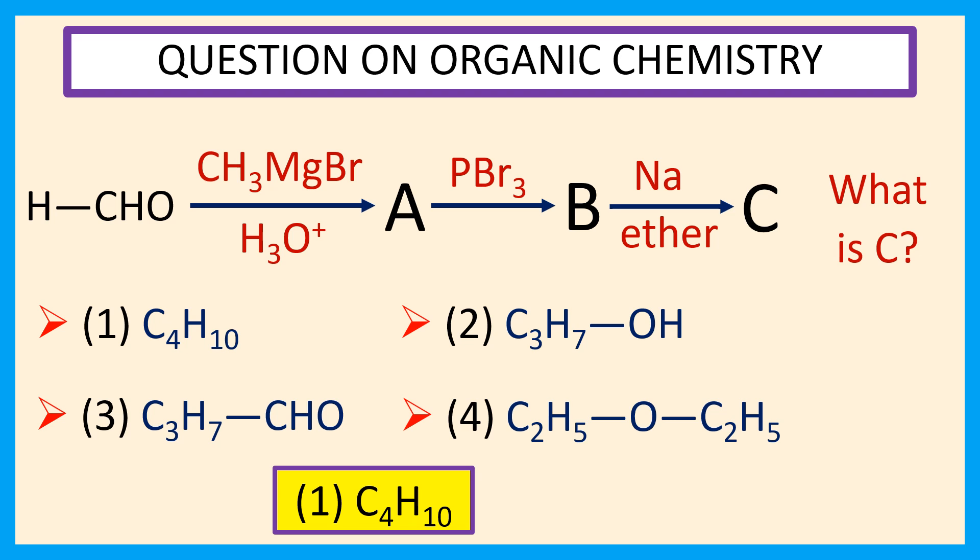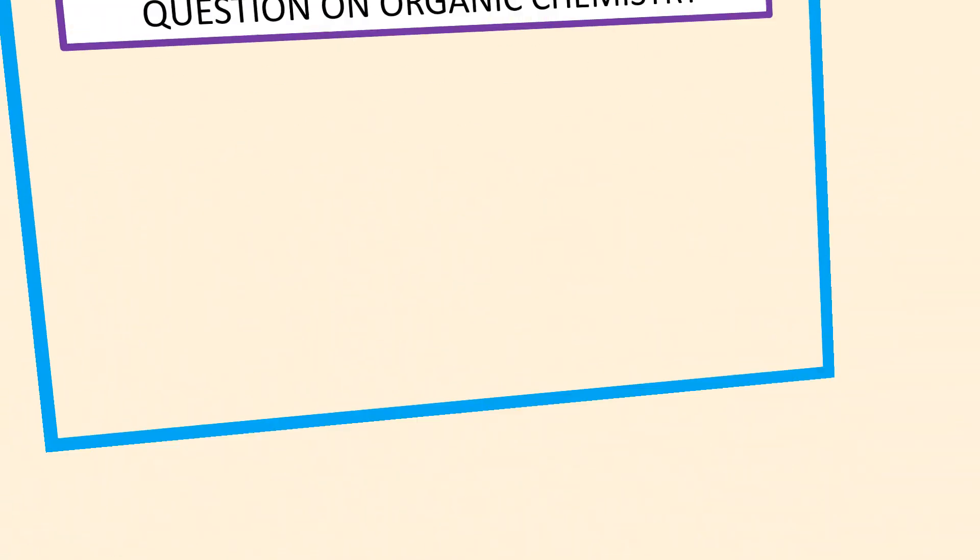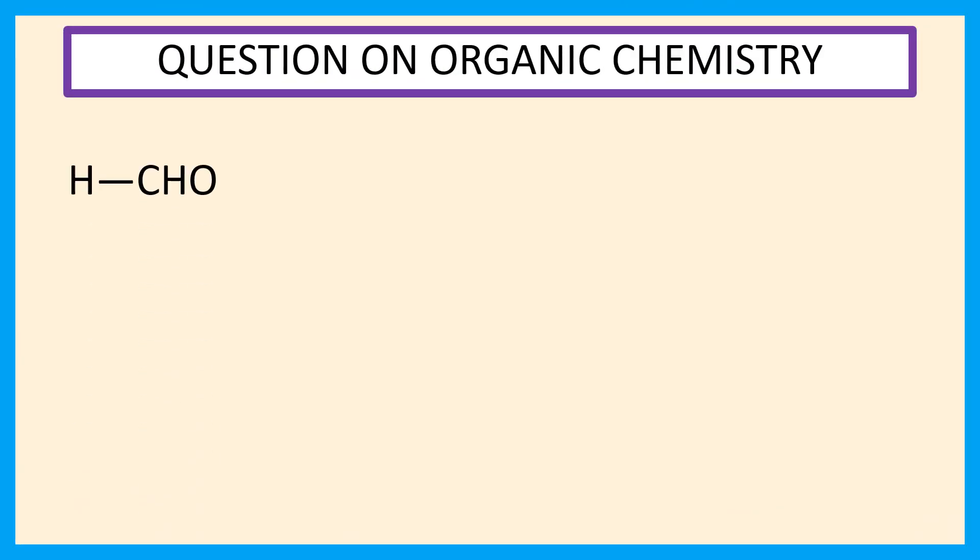Explanation we will see in the next slide. This is formaldehyde. Reaction of formaldehyde with CH3MgBr in presence of H3O plus produce CH3CH2OH that is ethyl alcohol. So, our compound A is ethyl alcohol.